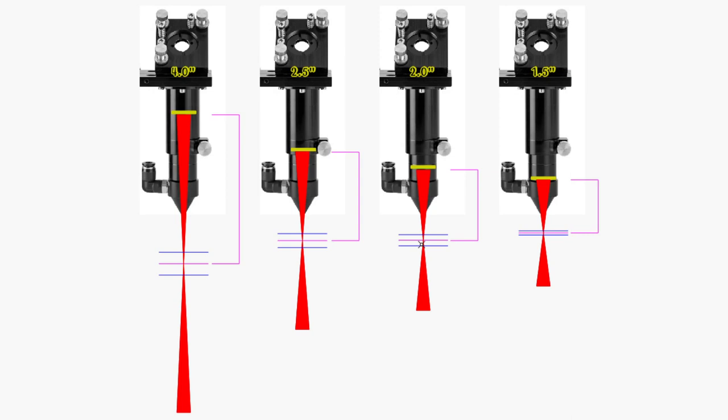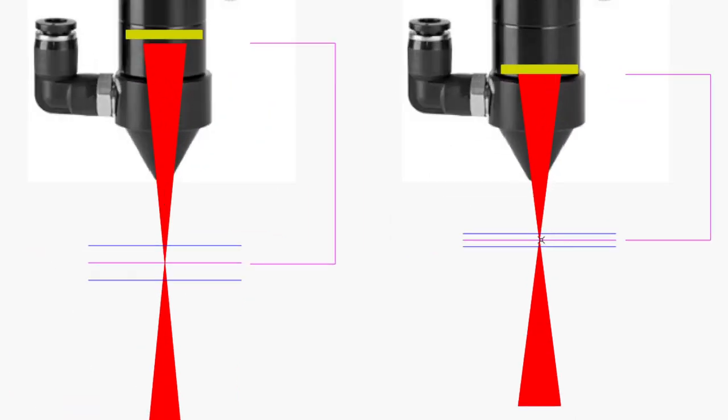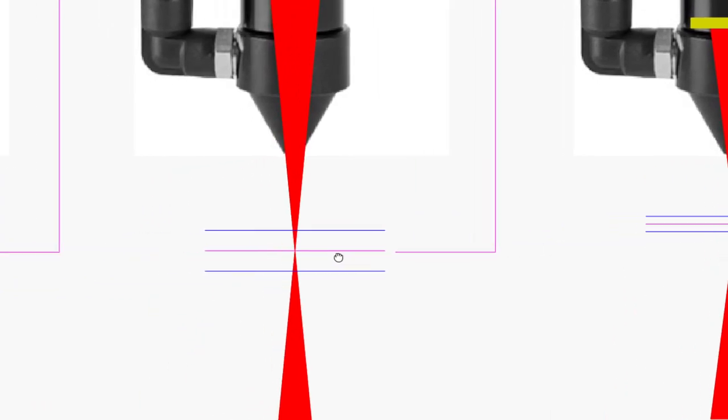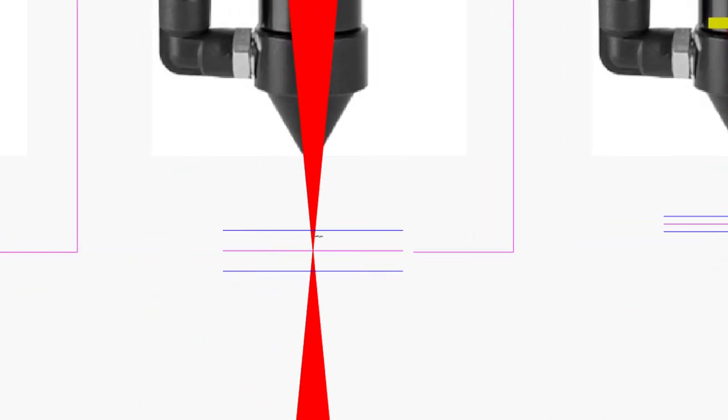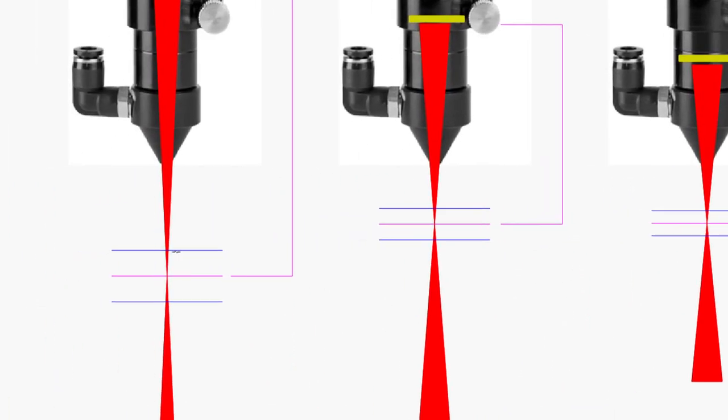And as you can see, as the lens focal distances get larger, that focal tolerance also increases. Now these diagrams are not exactly to scale and they're just there for representation. Just so that you can see the difference that you have. If I zoom in here, we have a very small area of focal tolerance, where the beam is at its greatest power. And then if we move along to the 2 inch lens, we can see that that tolerance gets larger, and also to the 2.5 and the 4 inch lens.